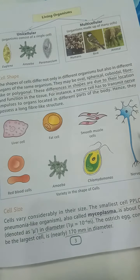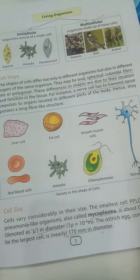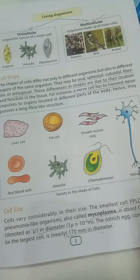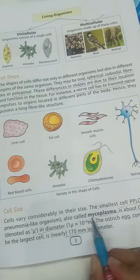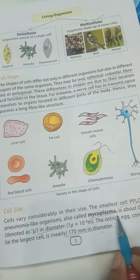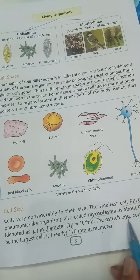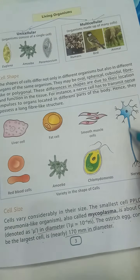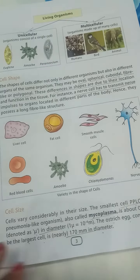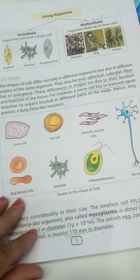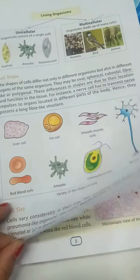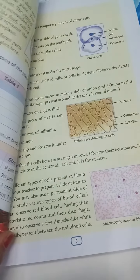The longest cell is the nerve cell. So we have seen three types of cells: the smallest cell — Mycoplasma; the largest cell — the ostrich egg; and the longest cell — the nerve cell, which can be approximately one meter long.